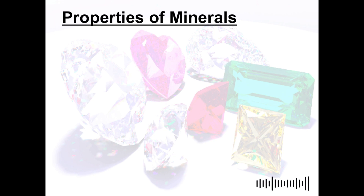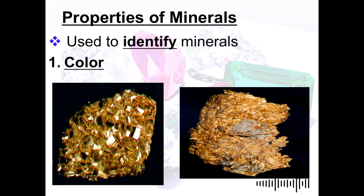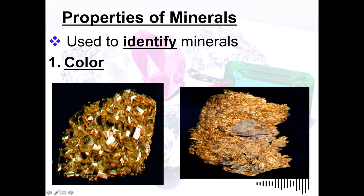We will be able to identify a certain mineral based on its properties. The first property is color. Color is considered to be the least reliable property for identifying a mineral because of the presence of impurities, as you can see with the different colors present in these minerals.